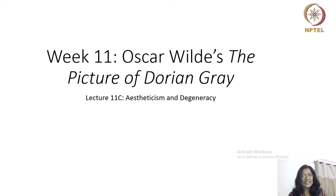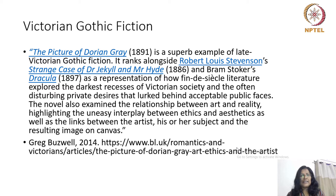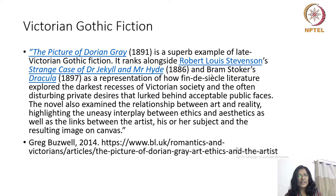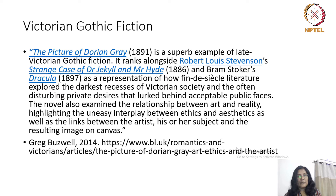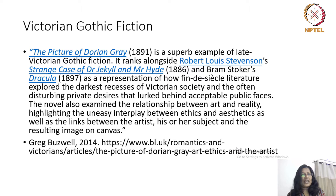The Picture of Dorian Gray is a superb example of late Victorian Gothic fiction. It ranks alongside Robert Louis Stevenson's Strange Case of Dr. Jekyll and Mr. Hyde and Bram Stoker's Dracula as a representation of how fin-de-siècle literature explores the darkest recesses of Victorian society and the often disturbing private desires that lurked behind acceptable public faces. The novel also examined the relationship between art and reality, highlighting the uneasy interplay between ethics and aesthetics, as well as the linkages between the artist, his or her subject, and the resulting image on canvas.